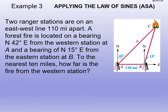Two ranger stations on an east-west line are 110 miles apart. Draw a horizontal line with station A and station B 110 miles apart. A forest fire is located on a bearing of N 42° E from station A — remember bearings: start facing north and rotate 42 degrees toward the east. Station B sees the fire on a bearing of N 15° E. We want to find how far the fire is from the western station.